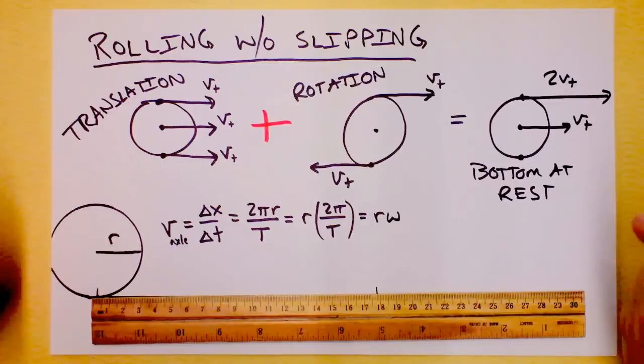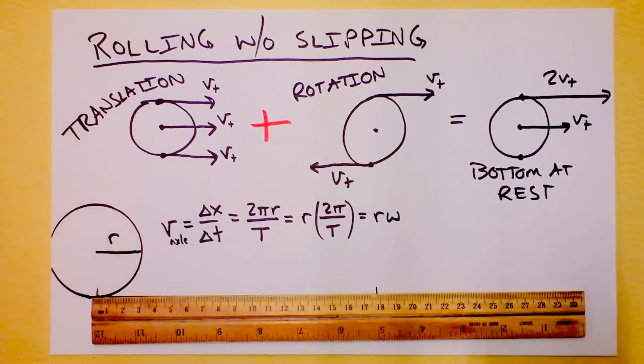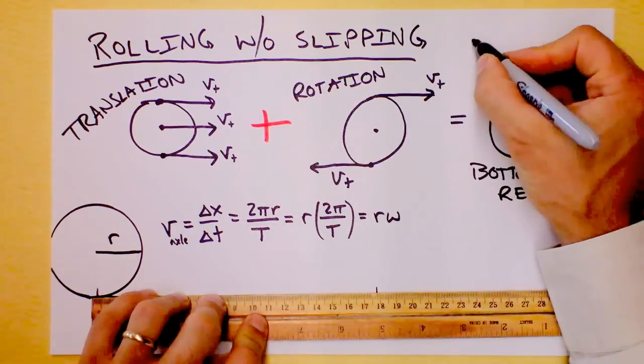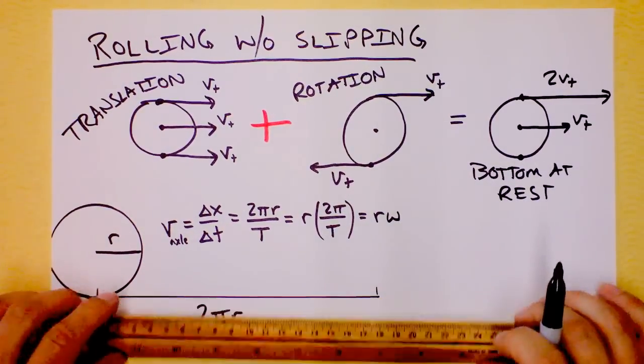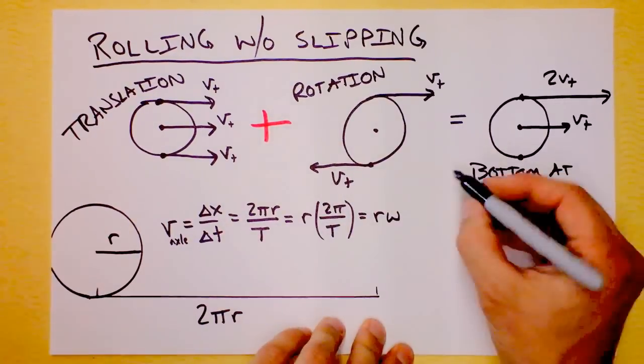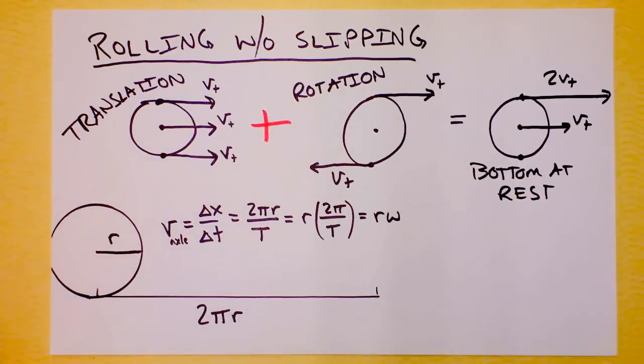When you look at a car tire, if it is truly driving, rolling without slipping, then the car tire is stopped at the bottom. The bottom being at rest is a critical element of something that's rolling without slipping.